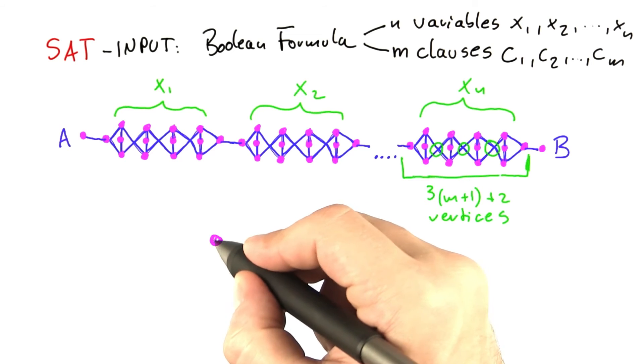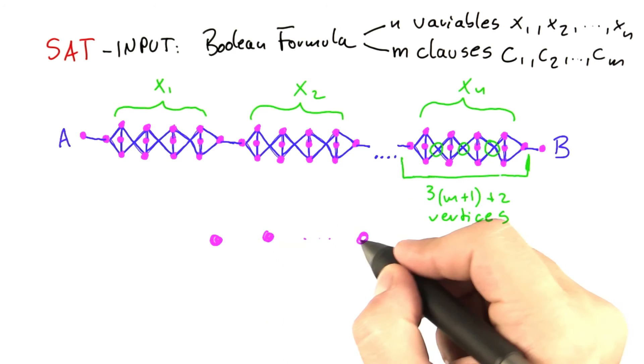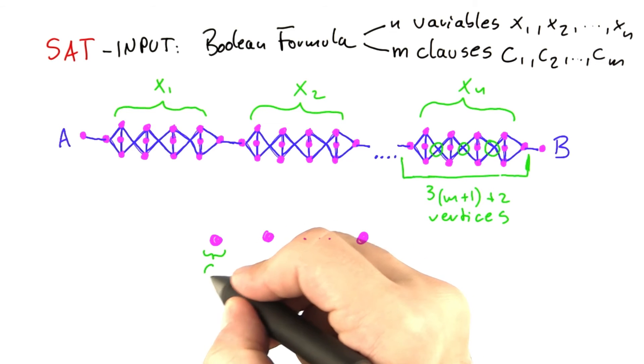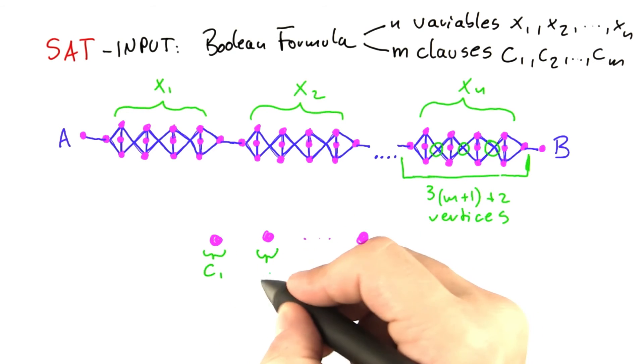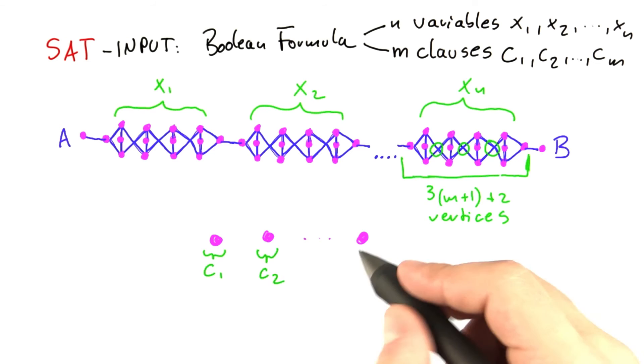Now for each clause, we're of course also going to add a vertex, like so. And again, this vertex here is going to represent clause number 1, this vertex here is going to represent clause number 2, and so on until we get to clause number m.